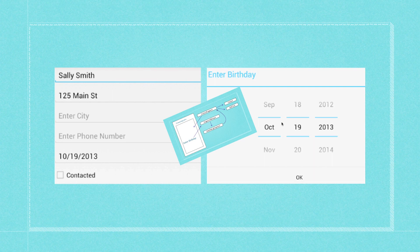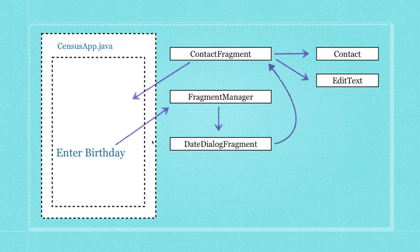Just to wrap your head around what's going on: ContactFragment is going to show inside your app window. We're going to enter a birthday, they're going to click on that. Whenever they do, inside of ContactFragment, a FragmentManager is going to be created which is going to create a DateDialogFragment. They're going to enter their date information, and when they exit the dialog, it's going to call back up to ContactFragment, which is going to change the birth date and change the value in the editable text window.